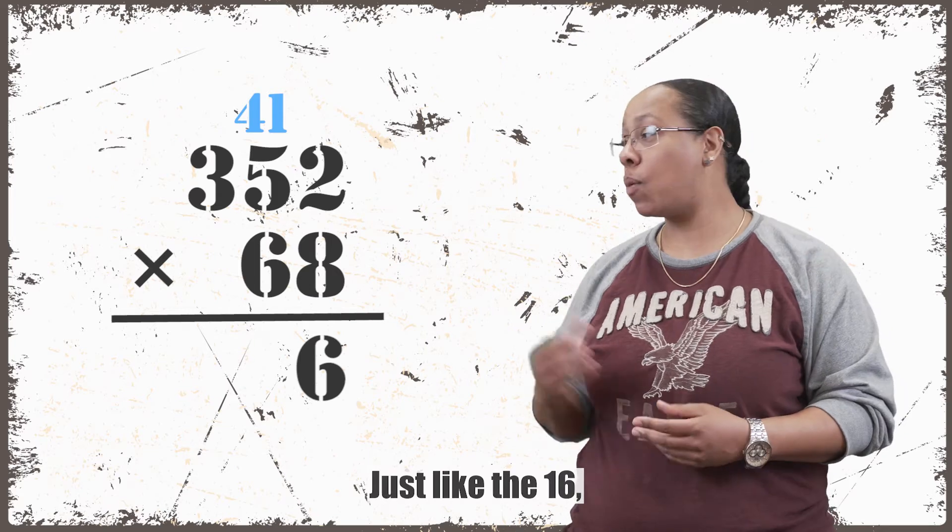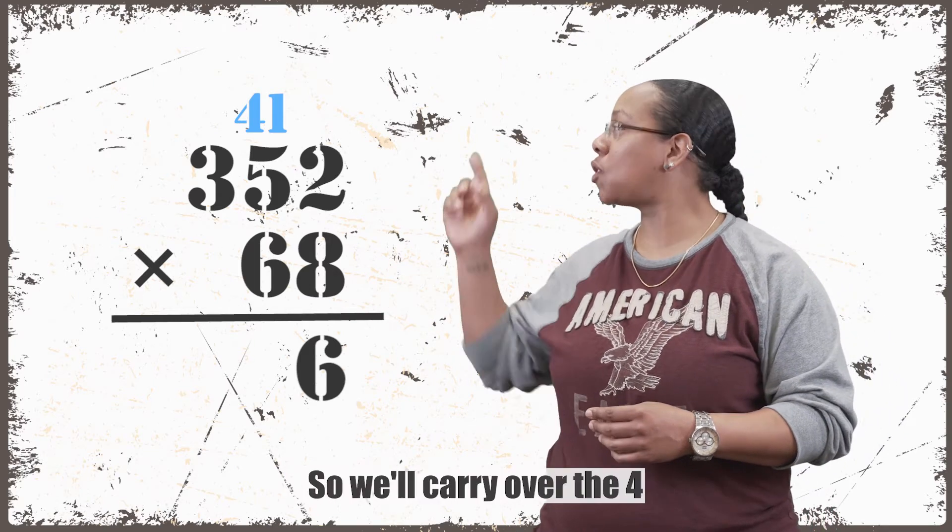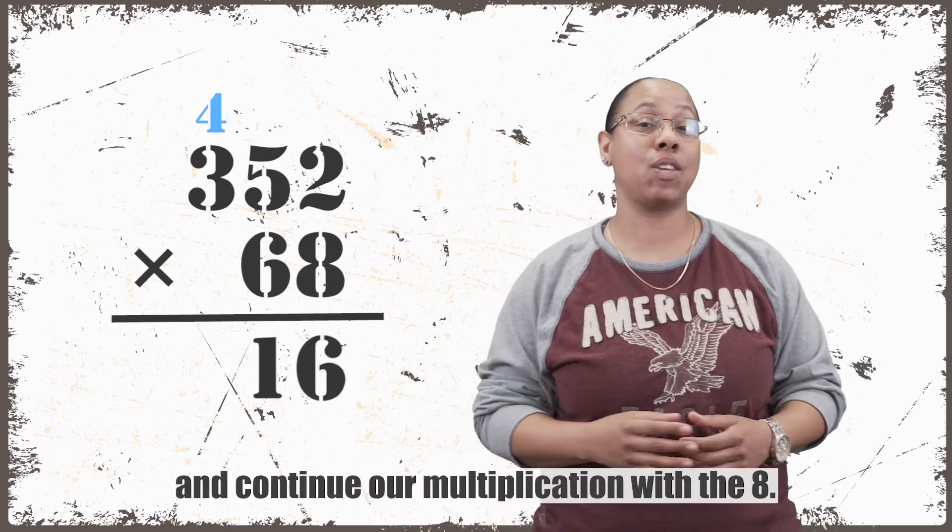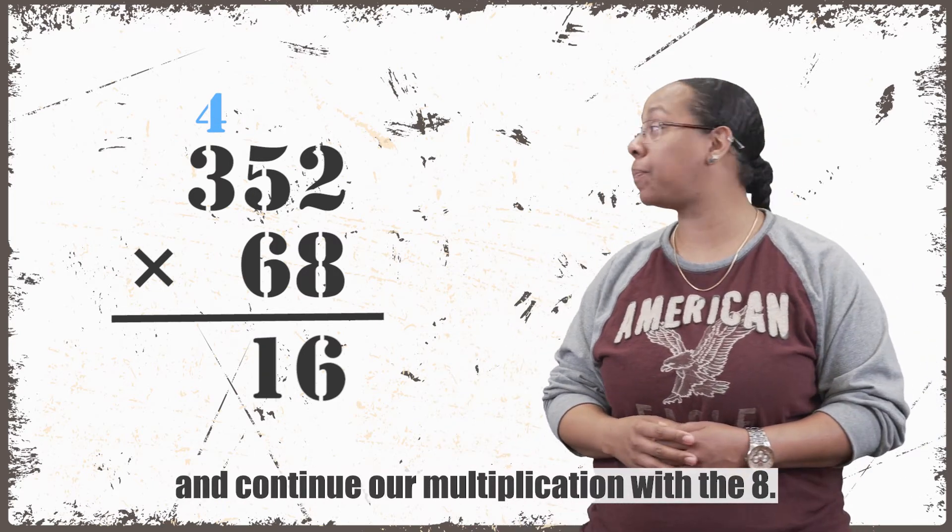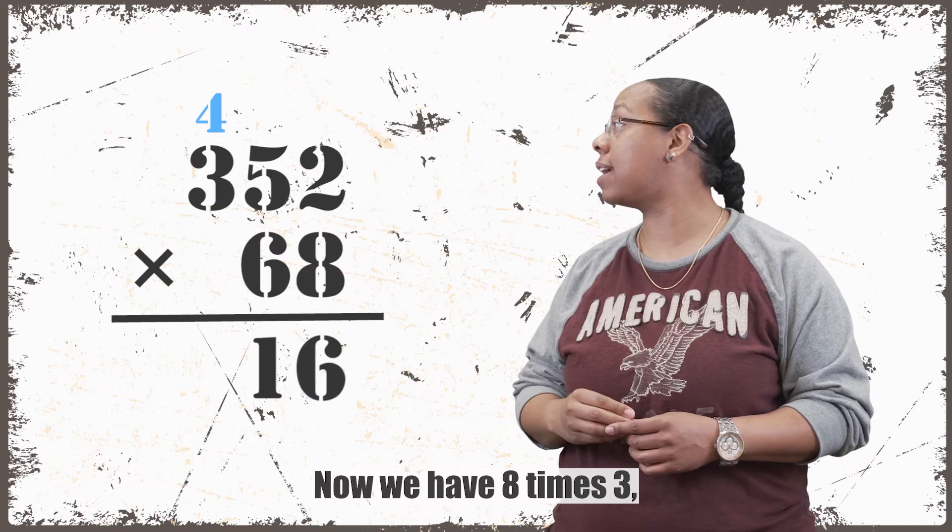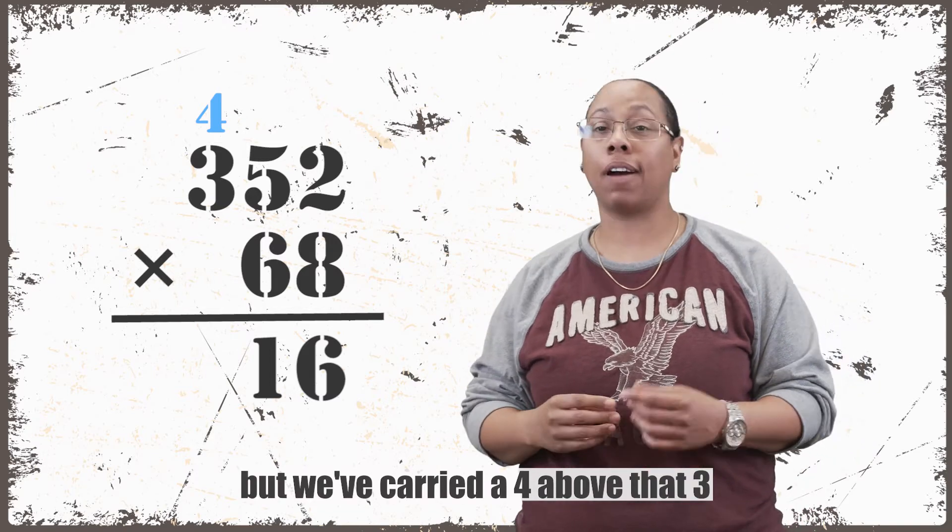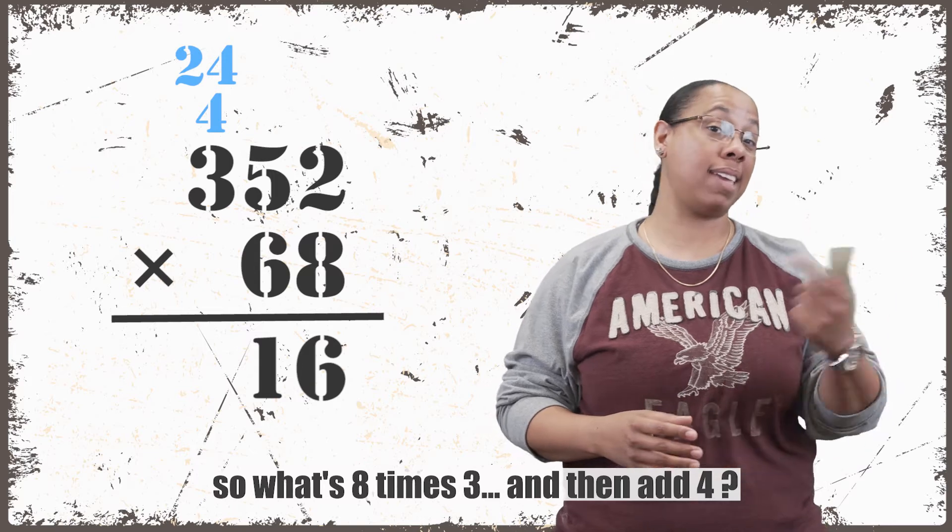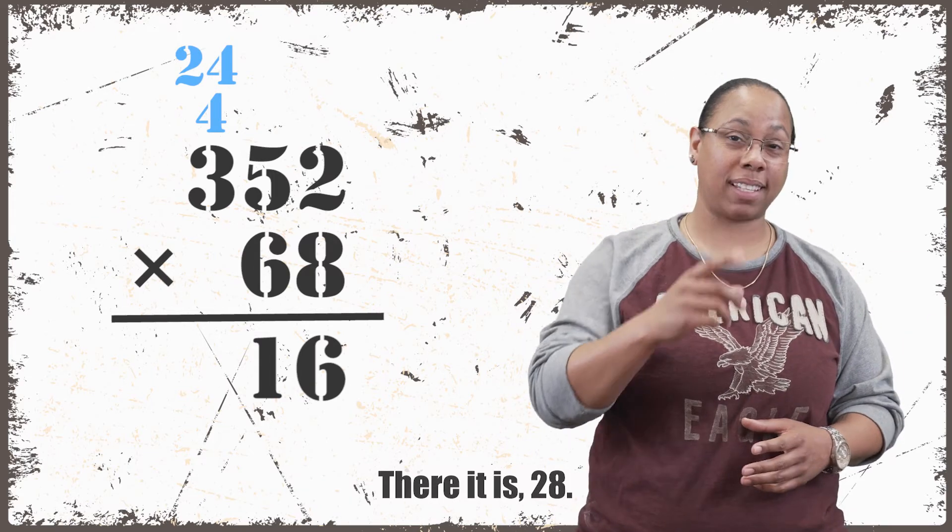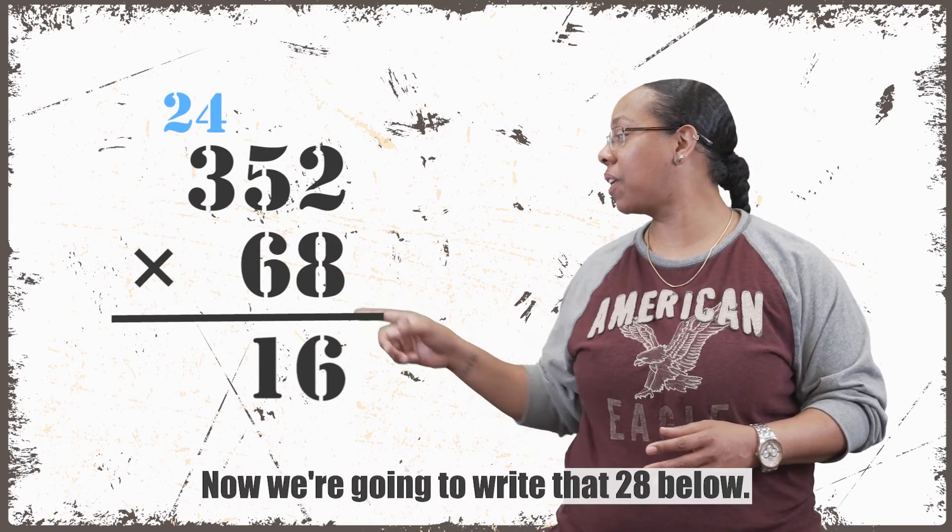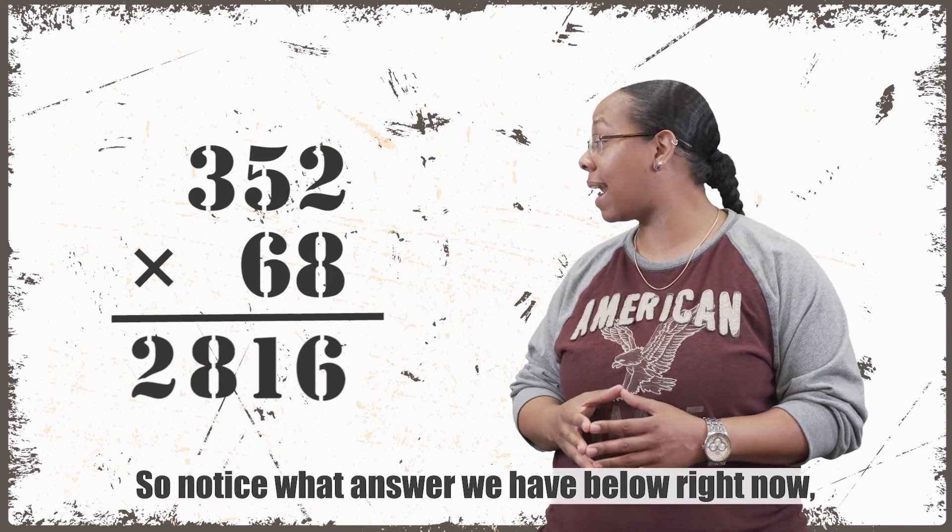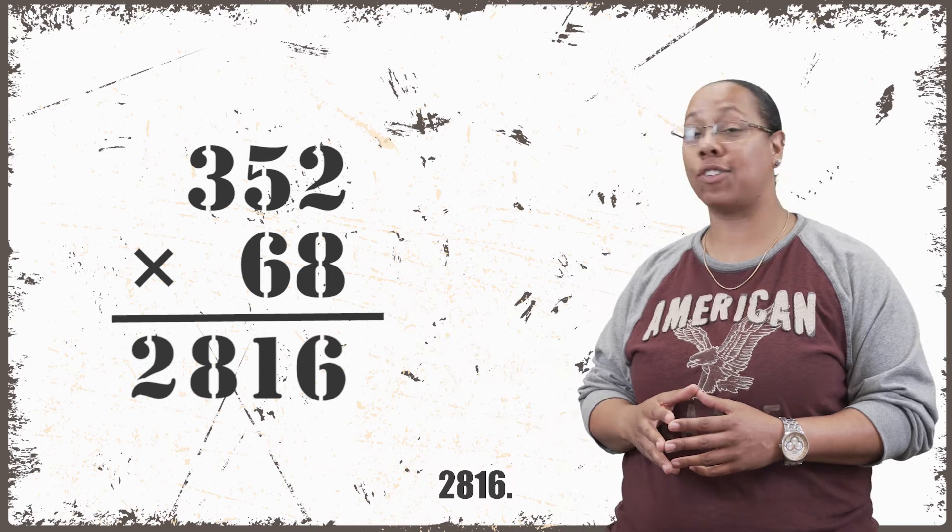Just like the 16, we can't fit all of that below. So we'll carry over the 4 and write the 1 below and continue our multiplication with the 8. Now we have 8 times 3, but we've carried a 4 above that 3. So what's 8 times 3 and then add 4? There it is, 28. Now we're going to write that 28 below. So notice what answer we have below right now: 2,816.